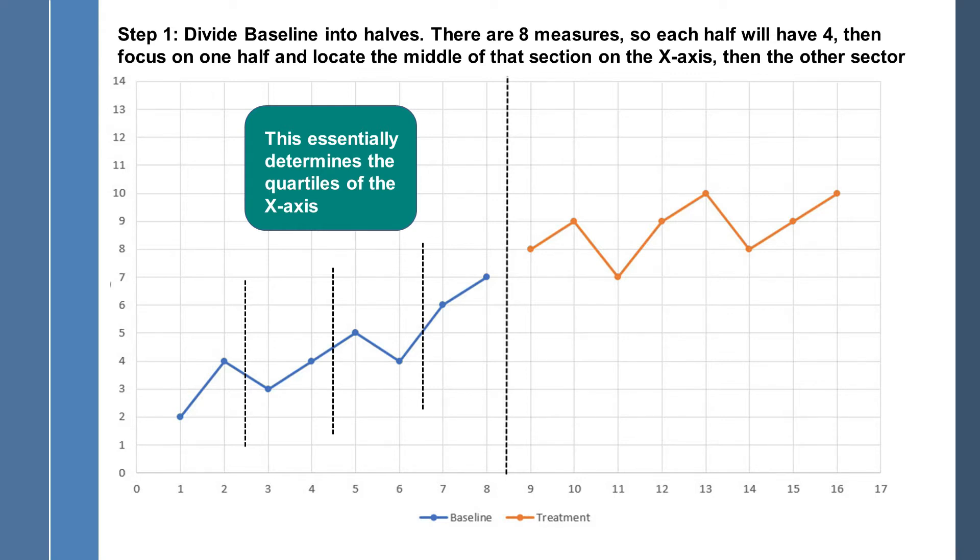It's measurement one, two, three, four, five, six, seven, eight, etc. So we can assume that those intervals are equal. Again, the underlying assumption there is that the amount of time in between each measurement is identical. Perhaps once every day or once every week, whatever. But we're not worried about that right now. So in a sense, what we've done is we've chopped up the baseline phase into four quarters. We can see where the quartiles are.